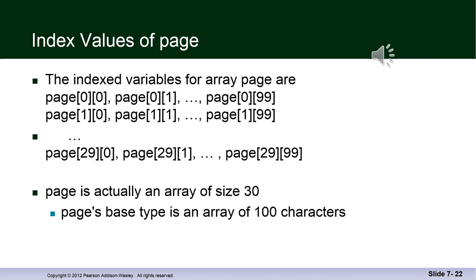So if you think about it, the previous example will hold 30 times 100 or 3000 indexed variables. And they are page[0][0], page[0][1] through page[0][99], and then page[1][0], [1][1] to [1][99], all the way up to page[29][0], [29][1] to page[29][99].